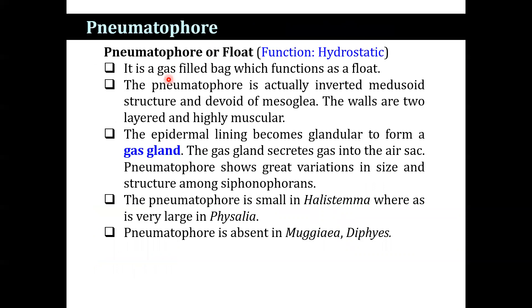The first medusoid modification is the pneumatophore, also known as the float. It is a gas-filled bag-like structure functioning as a float. The pneumatophore is actually an inverted medusoid structure devoid of mesoglea. The walls are two-layered and highly muscular, and the epidermal lining becomes glandular to form a gas gland. The gas gland secretes gas into the air sac.